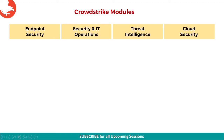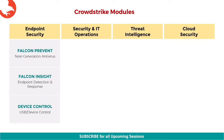CrowdStrike is one of the solutions that is a market leader, and that's why we did a study of their modules. The CrowdStrike platform, also called Falcon, has four major service or solution areas: Endpoint Security, Security and IT Operations, Threat Intelligence, and Cloud Security. Each of these solutions have three modules, available on the Falcon platform and implemented via a single endpoint agent and cloud-based management console.